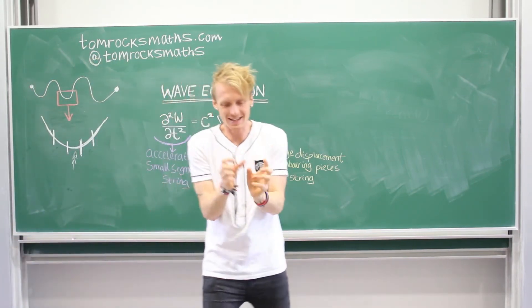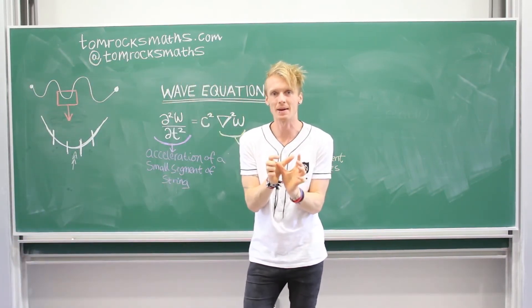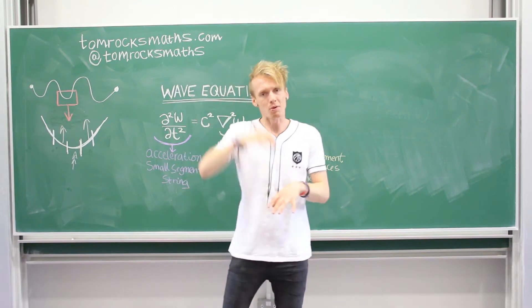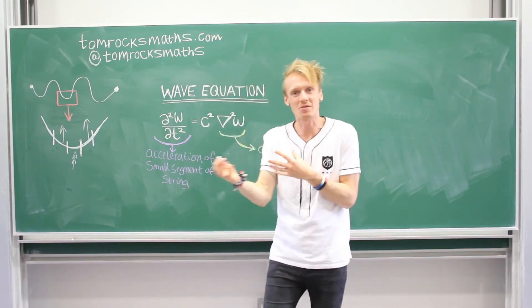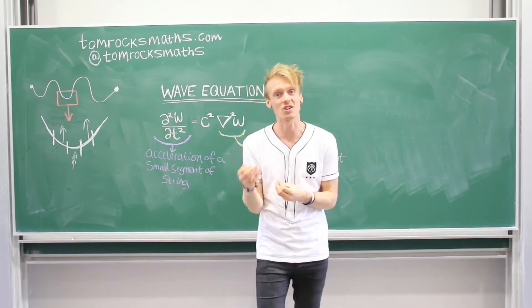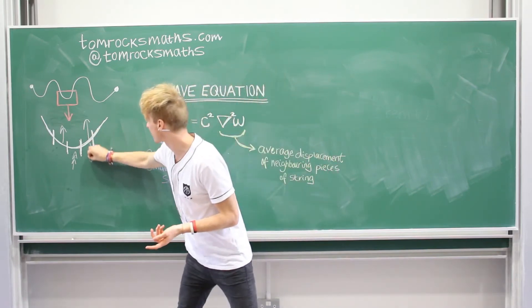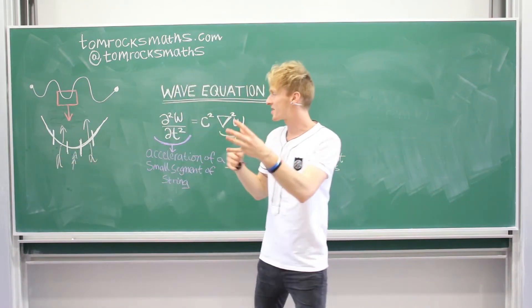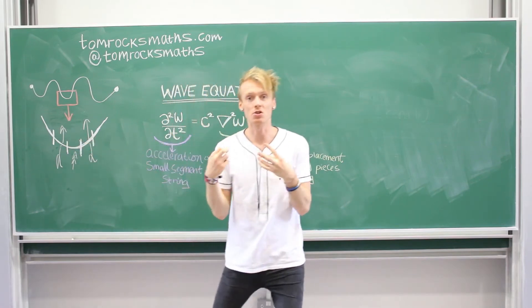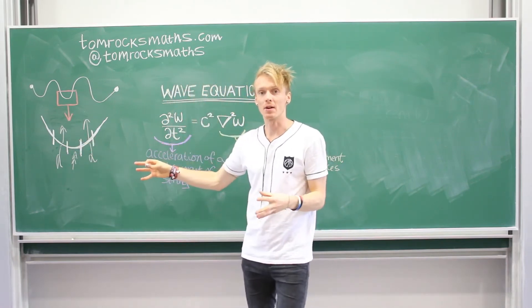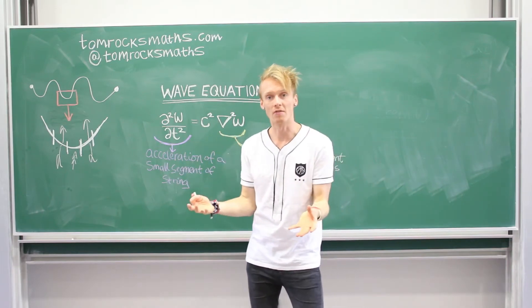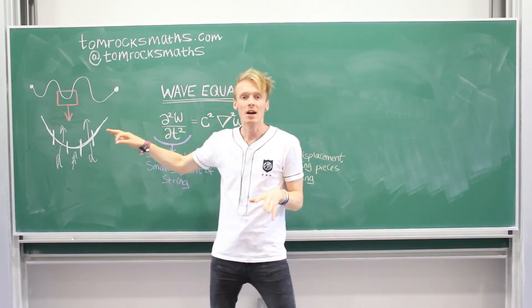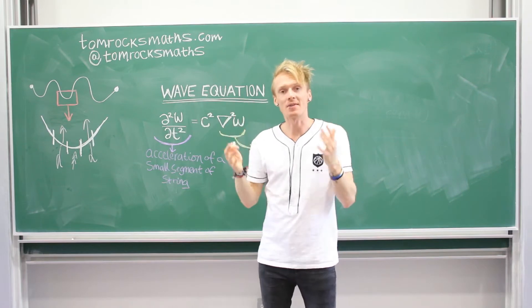If the two pieces next to the bit we're interested in — the central bit, the bits either side — both move up, then the bit in the middle is probably going to go up, so its acceleration will change. If these two pieces go down, then maybe our central piece will go down. Whatever the neighbouring segments do will affect the central segment and the acceleration we're trying to work out. This physics and thought experiment is pretty much what the equation is representing.